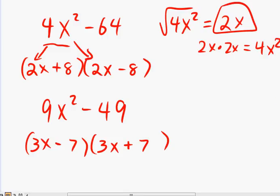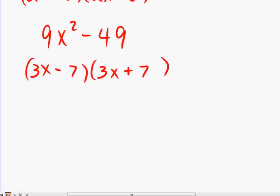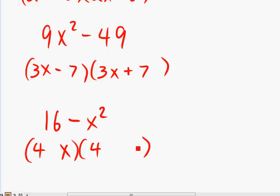You can always check your work by foiling or using the distributive property. And you can also switch it around. This is the last one I promise you. I don't want to spend too much of your time. Let's say we have 16 minus x squared. But this is still the difference of two perfect squares. But the factors, the order will be rearranged. The 4s will be in the front. And the x will come in the second place here. And we put a positive and negative. And these will be the factors.